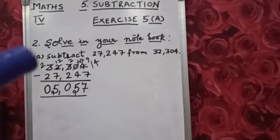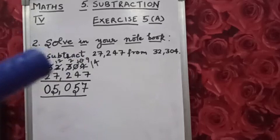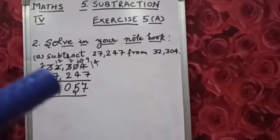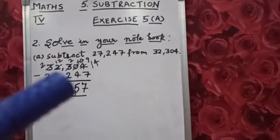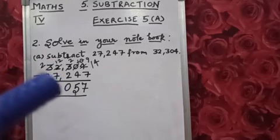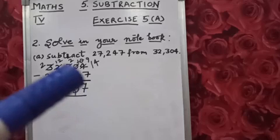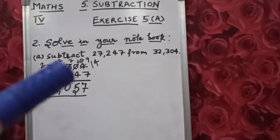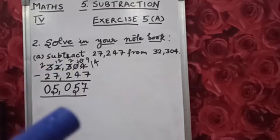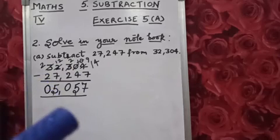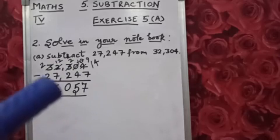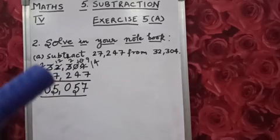Now we can't minus 2 from 7 (thousands place). So again, 2 will take borrow from 3 (ten-thousands). This 2 will become 12. So 12 minus 7 is 5, and this 3 will become 2. So 2 minus 2 is 0.